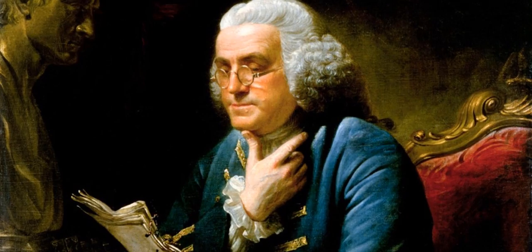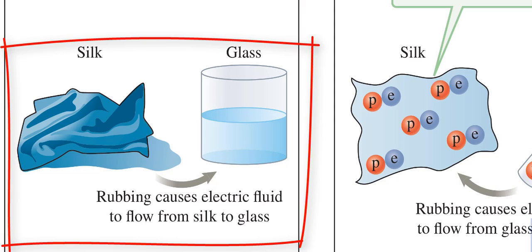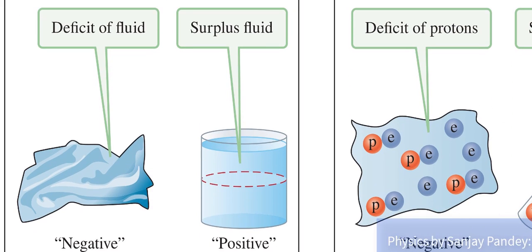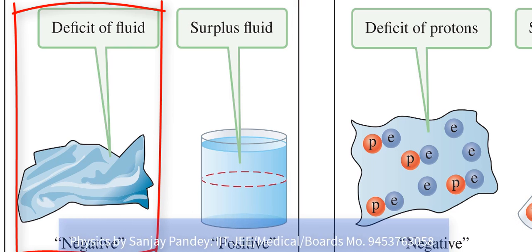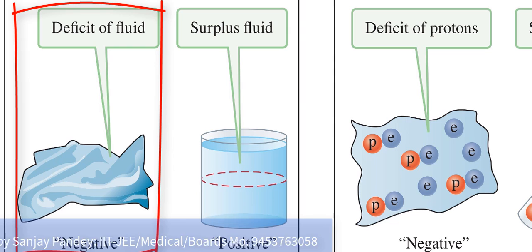Now I am giving you Franklin's explanation about it. According to Franklin, all objects are full of electric fluids. If we transfer some electric fluid from one body to other, then object with surplus of electric fluid is positive or plus. And an object with deficit of electric fluid is negative or minus.